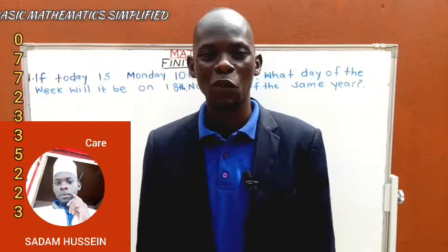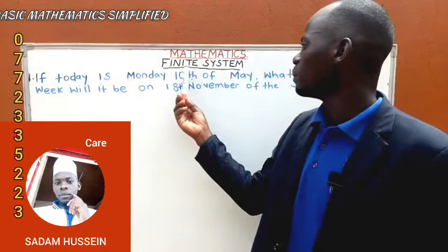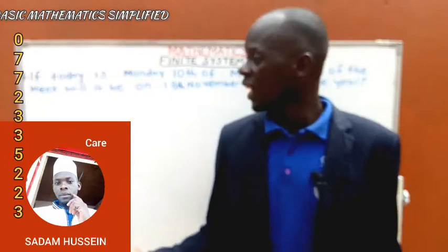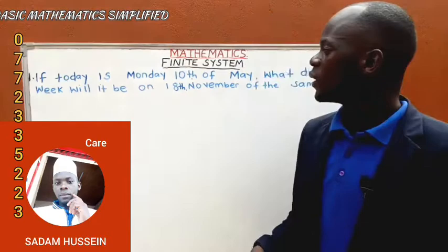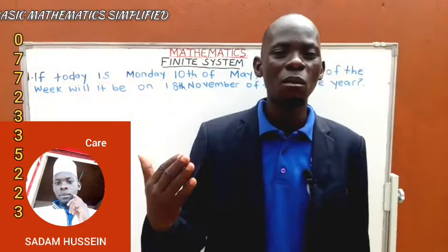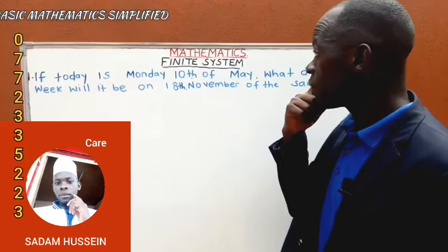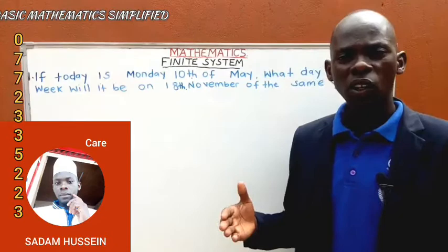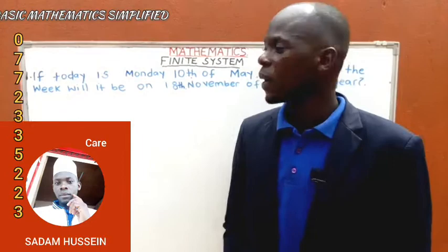Today I want to look at something about finite systems. This is finite system — it's all about groupings. We are looking specifically at the days and the months. We all know that a week has seven days and a year has 12 months. When dealing with those groupings, we have different finite systems depending on what you are handling.